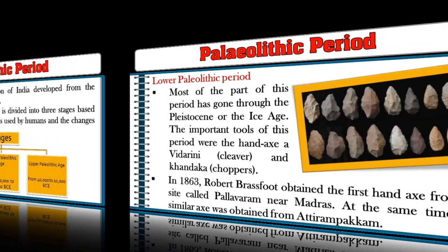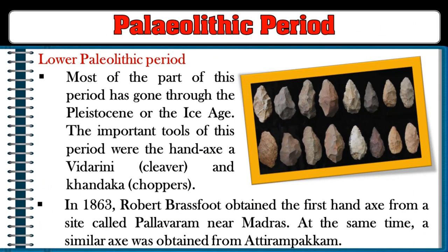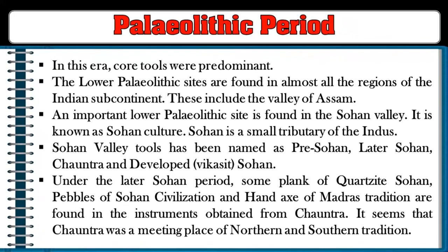Most of the Lower Paleolithic period passed through the Pleistocene or Ice Age. Important tools of this period were hand axes, cleavers, and choppers. In 1863, Robert Brassfoot obtained the first hand axes from a site called Pallavaram near Madras. A similar hand axe was also obtained from Attirampakkam. Core tools were predominant during this era.